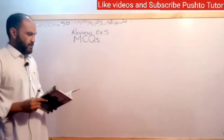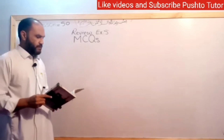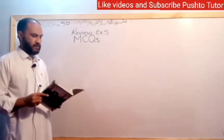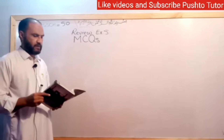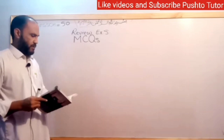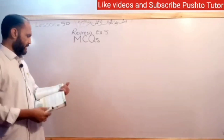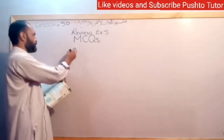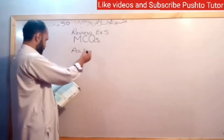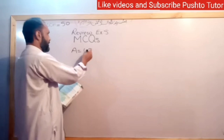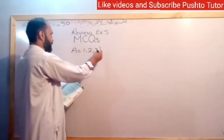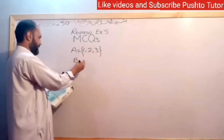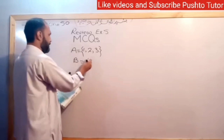Question number 1. At the end of each question, 4 circles are given — fill in the correct circle only. Question number 1: if A is equal to {1, 2, 3} and B is equal to {4, 5},